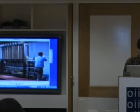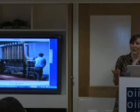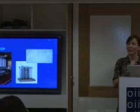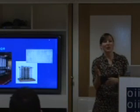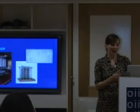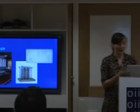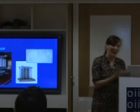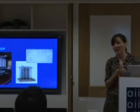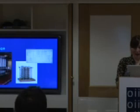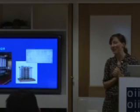Babbage himself never actually saw his machine working, which is a terrible shame. But the Science Museum used many of the same techniques available in Victorian times, working to the same tolerances Babbage would have had, to prove that his designs would have been realisable. The work showed that was possible. The reason it never happened was probably because he was such a difficult character — he fell out with his engineer, Joseph Clement, over a workshop he asked him to move into and over payment.